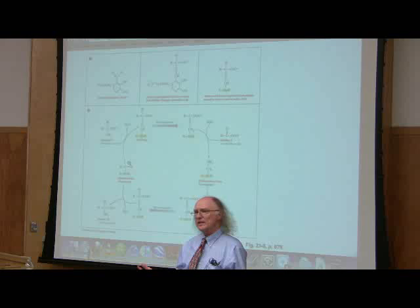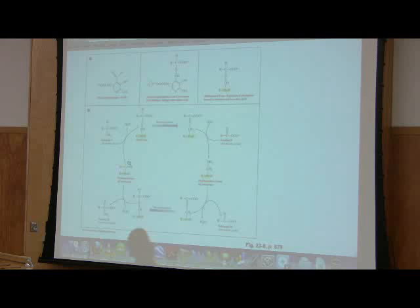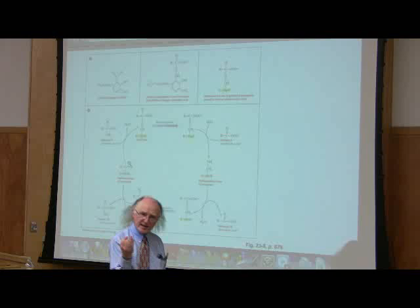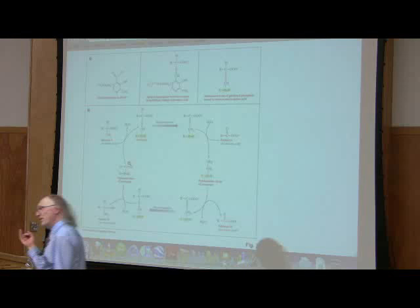This relationship is actually passed along in transamination. Let's imagine that I have some alanine sitting around in my cell and some oxaloacetate. One has a nitrogen, that's the alanine. One does not have a nitrogen, that's the oxaloacetate. Let's say my body needs aspartic acid but it's got plenty of alanine.